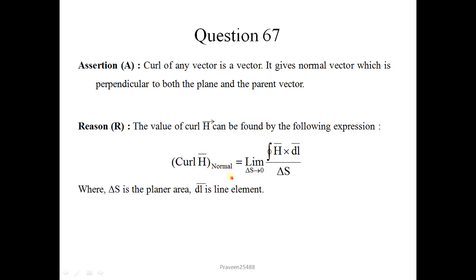Curl of any vector is a vector. It gives normal vector which is perpendicular to both the plane and parent vector. This is correct. The value of curl H can be found by the following expression, the curl of H. Basically there should be dot on the place of cross. Then it would be correct. Correct option is 3.